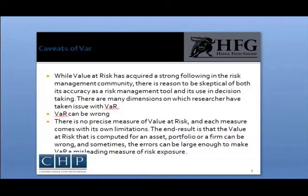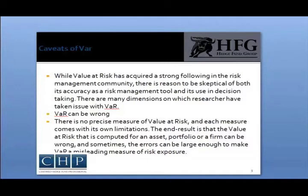For example, return distributions: every Value at Risk measure makes assumptions about return distributions, and if violated, the results can be incorrect estimates of Value at Risk. With Delta Normal estimates of VAR, we are assuming that the multivariate distribution is a normal distribution, since the value at risk is based entirely on the standard deviation in returns. With Monte Carlo simulations, we get more freedom to specify different types of return distributions, so our inputs and assumptions can be different, but we still can get the wrong type of risk measurement.